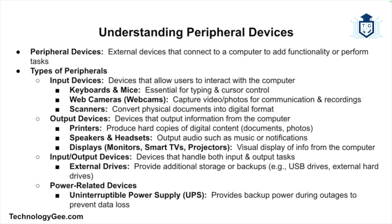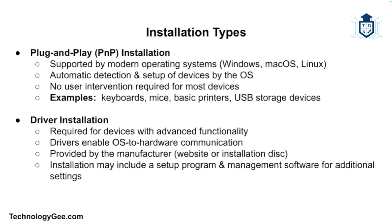Speakers and headsets are output devices for audio, including music, calls, and notifications. Displays are output devices that allow visual display of information from your computer. We also have the UPS, or uninterruptible power supply, which provides backup power to keep your devices running in the event of a power outage.